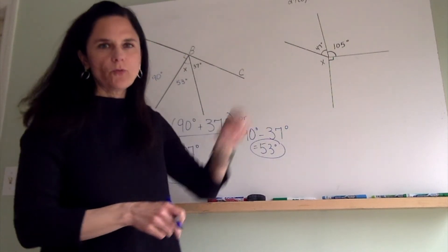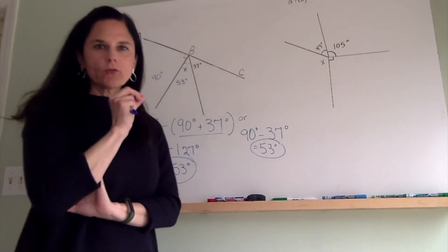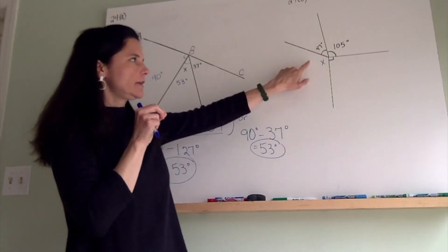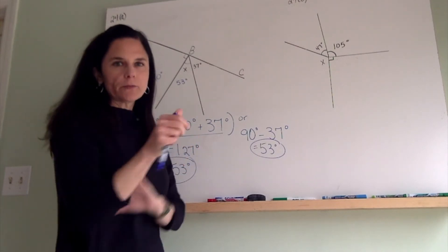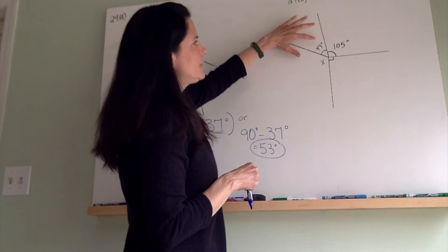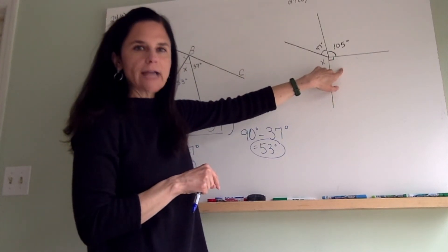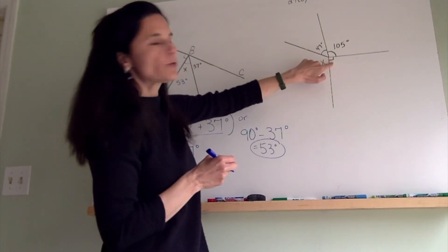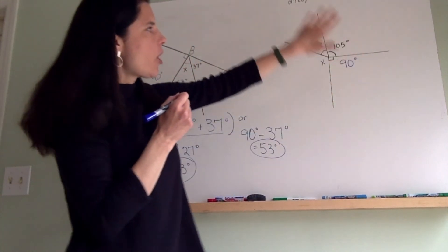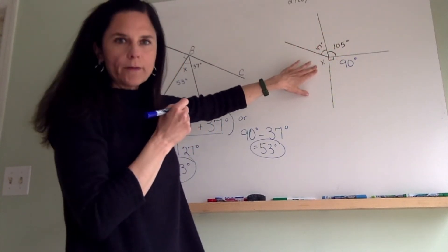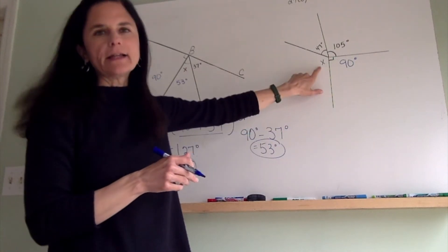Moving on to 24B. In this problem, you have four angles around a point. The angle property we use is that all of the angles around a point add up to 360 degrees. We're given that one angle is 47 degrees, another is 105 degrees, and the angle with the little square is a right angle equal to 90 degrees. So we have three of the four angles and we can subtract them from 360 to find the unknown angle X.